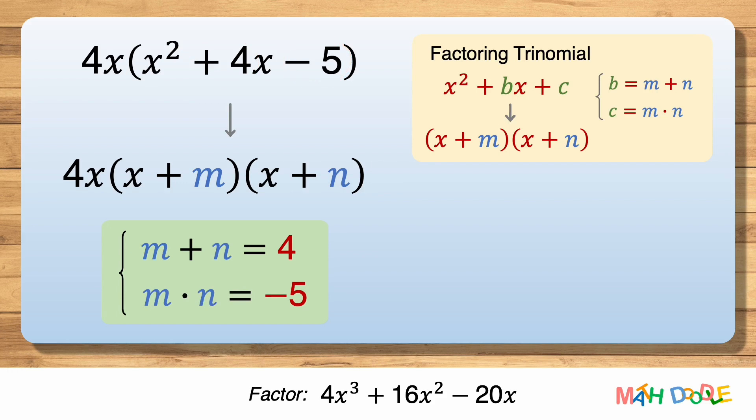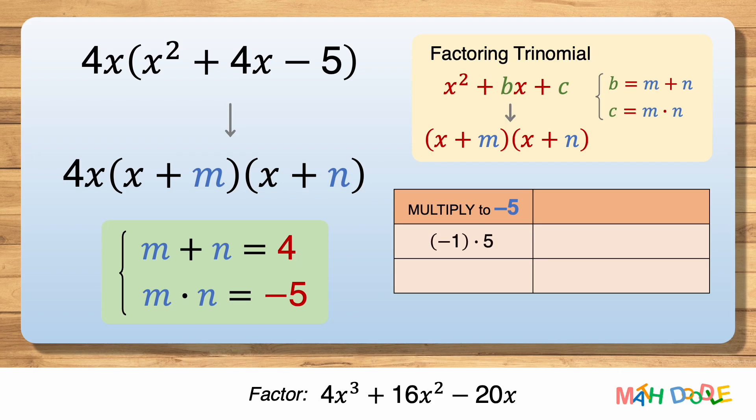So our goal is to find two numbers that add to 4 and multiply to -5. First, let's think about all the combinations of two numbers that multiply to -5. -1 times 5 is -5, and 1 times -5 is also -5.